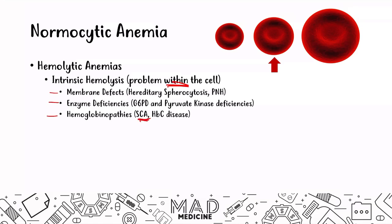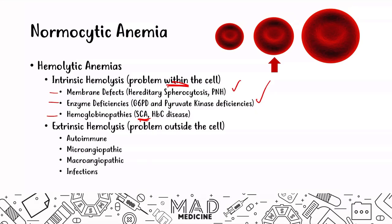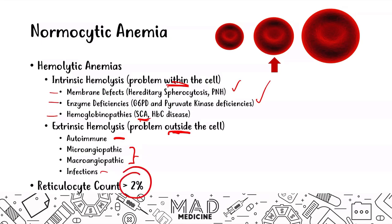We'll start with sickle cell anemia. Extrinsic causes of hemolysis include autoimmune disorders, blood vessel issues, and infections. Because red blood cells are being lysed, the body upregulates RBC production, leading to more immature red blood cells — reticulocytes — being released into the bloodstream. The reticulocyte count will be high, greater than 2%, especially in hemolytic anemias. Normally it should be 1–2%, but here it will be elevated.